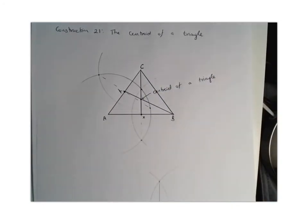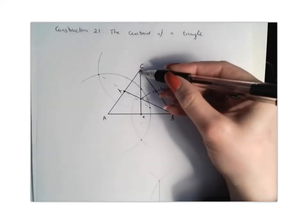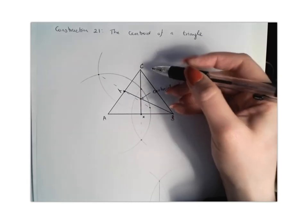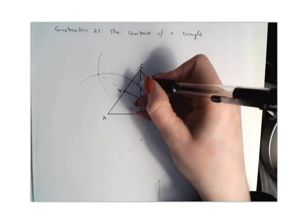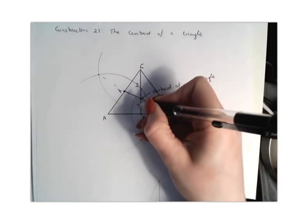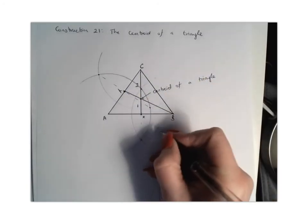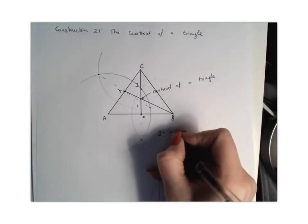And the other thing that you need to know about the centroid of a triangle is that it divides each median in the ratio 2 is to 1. So what that means is that this line, the line XC, is in the ratio 2 is to 1. So this section here would be 2, and this section here is to 1, in the ratio 2 is to 1.